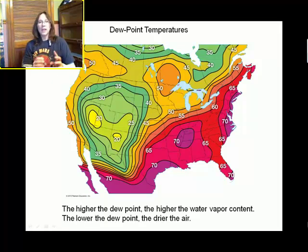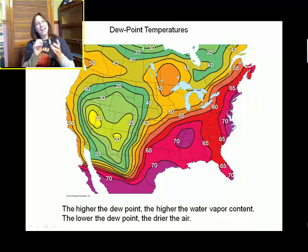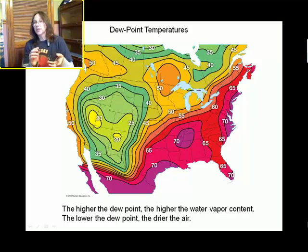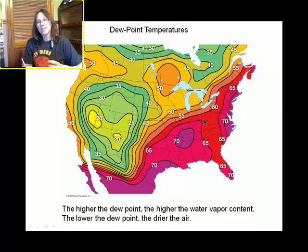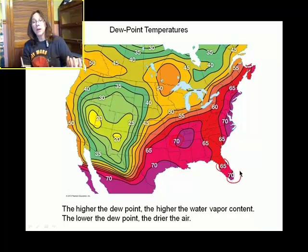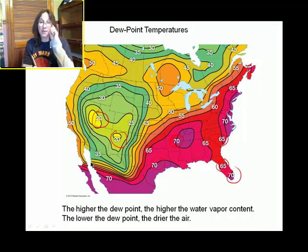These look like isotherms. Remember, we can take a map and draw isopleths — lines connecting locations with the same value. Isotherms connect locations with the same temperature, but these are actually dew point temperatures. The higher the dew point temperature, the more water vapor there is, so here we have some muggy situations. The lower the dew point temperature, the less water vapor there is.